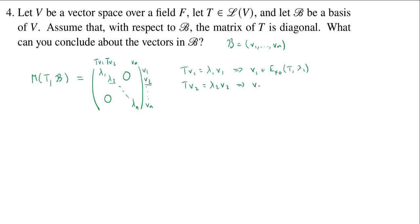And I'd conclude that V2 is some eigenvector for T corresponding to lambda 2. And I keep going like this.